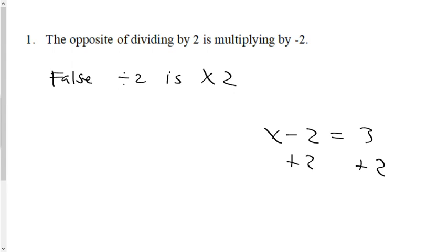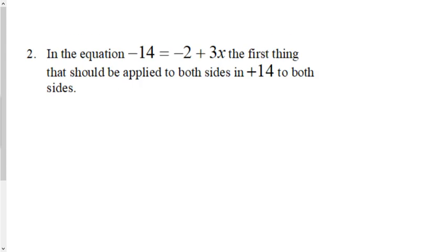Adding two and subtracting two—it's both two, adding and subtracting the number two. In multiplication and division, we've got to divide by the same number, not a different number. So the answer is false. The opposite of dividing by two is multiplying by two.